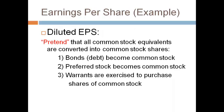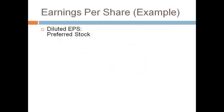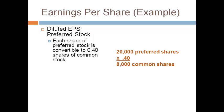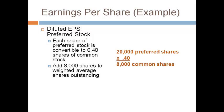We will now compute diluted earnings per share — the amount that EPS would be if all of the common stock equivalents were converted into common shares. We will pretend that bonds become common stock, preferred stock becomes common stock, and warrants are exercised to purchase common stock, following the if-converted method and the treasury stock method. First, let's pretend the preferred stock was converted into common stock. Each preferred share can be converted into 0.4 shares of common stock. Multiply the total preferred shares by 0.4 to get 8,000 shares of common stock. Pretend the conversion is made at the beginning of the year and the 8,000 shares are added to the weighted average outstanding shares.